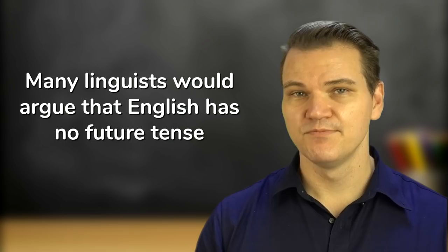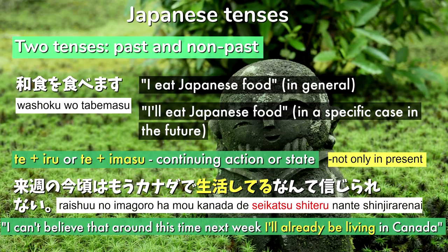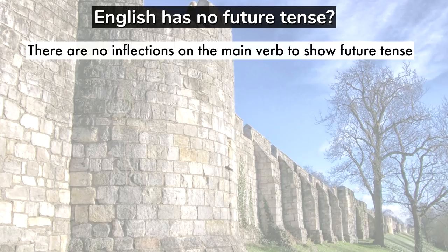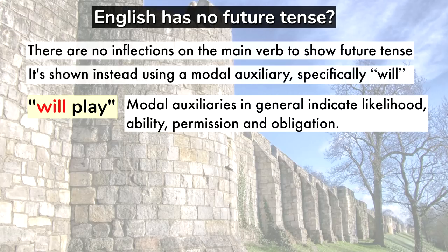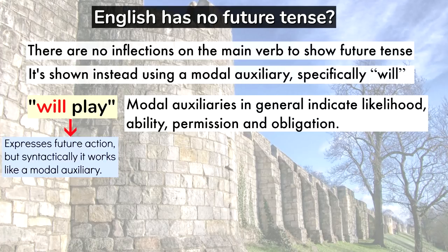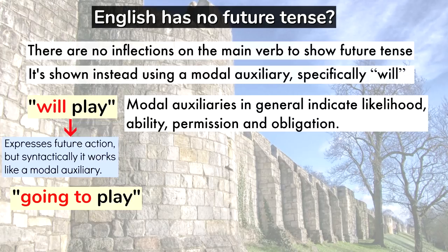Many linguists would even argue that English has no future tense. That's because there are no inflections on the main verb to show future tense, but it's shown instead using a modal auxiliary, specifically will. Modal auxiliaries in general indicate likelihood, ability, permission and obligation. Will does express future action, but syntactically it works like a modal auxiliary. And there's also the construction going to, which can be placed in front of the main verb to indicate the future. Semantically speaking, English can express the meaning of the future tense using these constructions, but grammatically they're not really future tense.